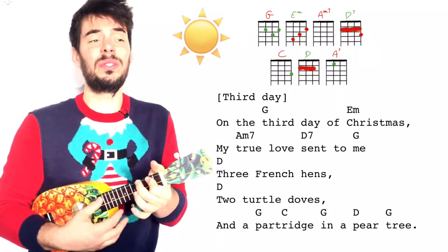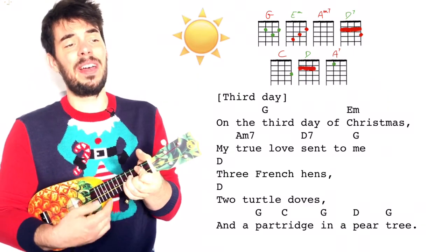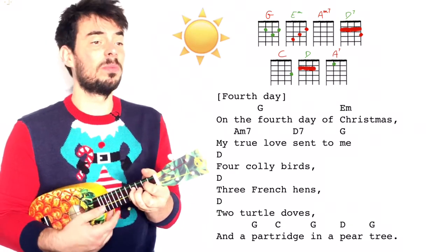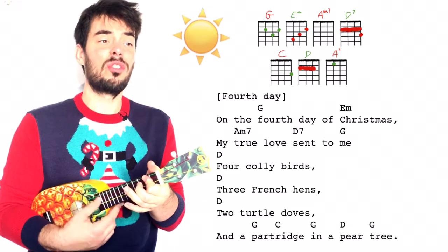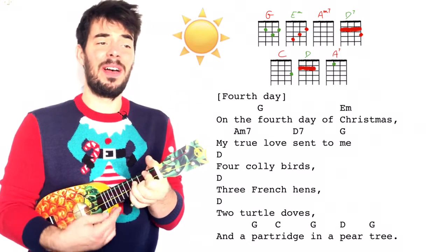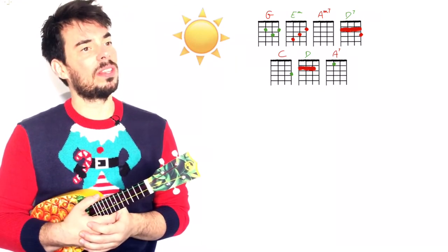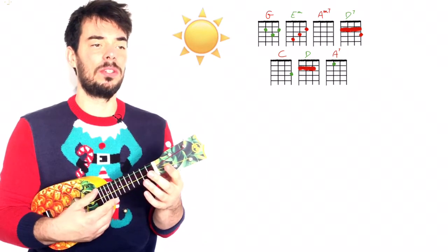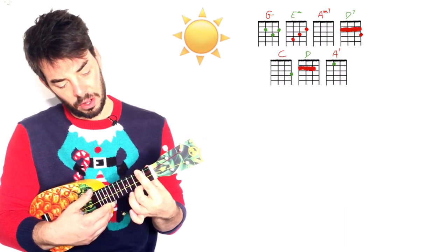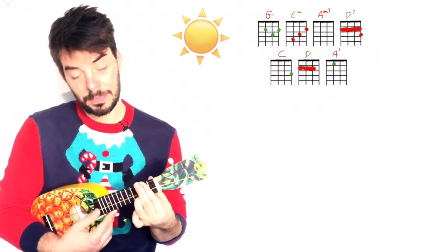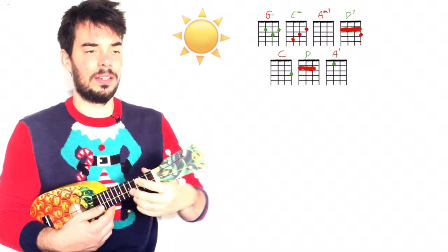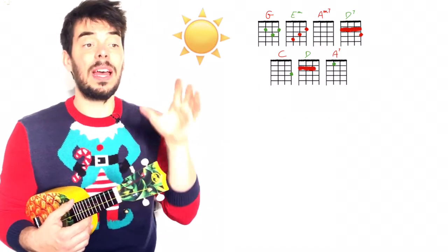Third day of Christmas: 'on the third day of Christmas my true love sent to me three French hens, two turtle doves and a partridge in a pear tree.' Now four — quite fast — 'on the fourth day of Christmas my true love sent to me four golly birds, three French hens, two turtle doves and a partridge in a pear tree.' A little thing I didn't mention is how I play the D7 — I play it with my index all across the twos, which is normal, but then instead of my middle finger on the third fret I use my ring finger, which lets me be more comfortable and twist less.